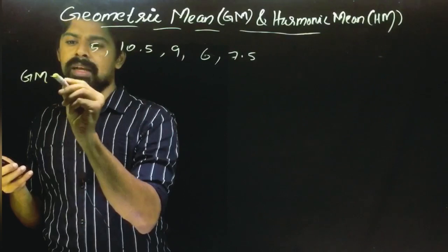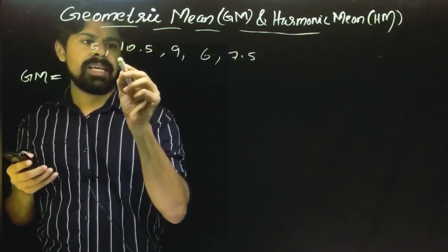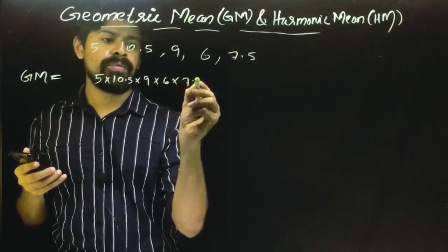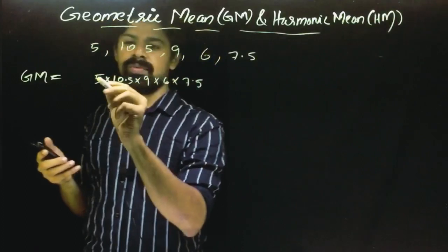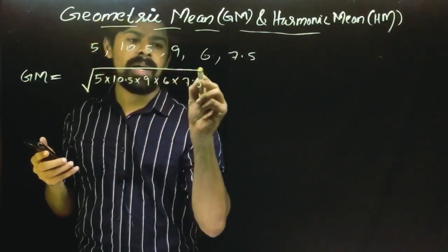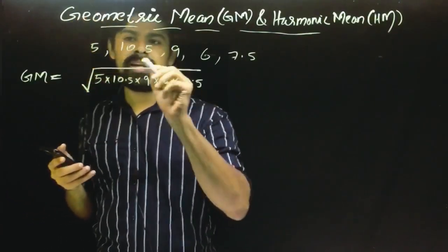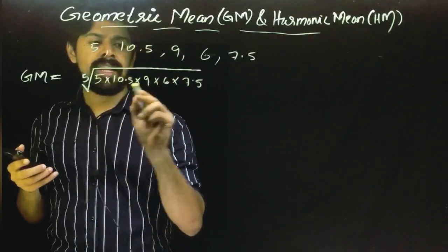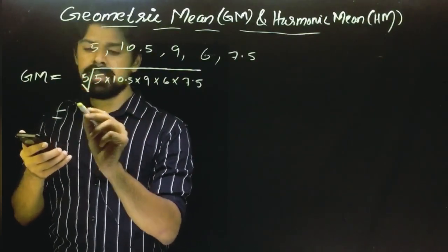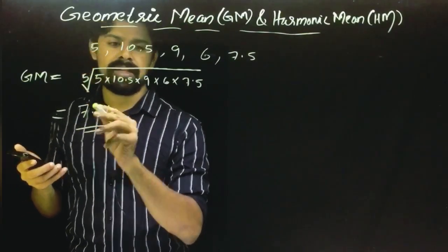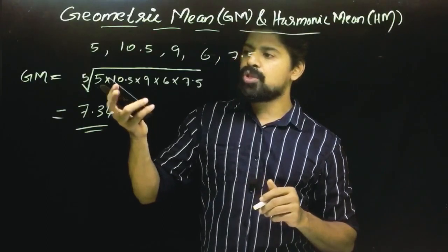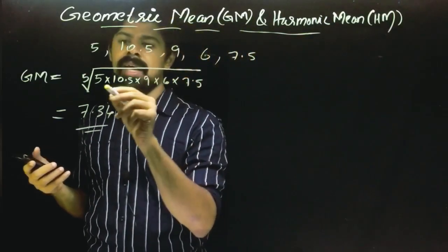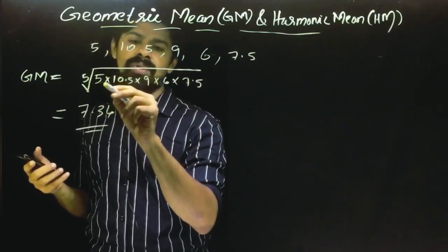GM's formula: we multiply all the values — 5 × 10.5 × 9 × 6 × 7.5 — this is the product of all numbers, and then we take the 5th root of that product. This gives us the geometric mean, which equals approximately 7.34.